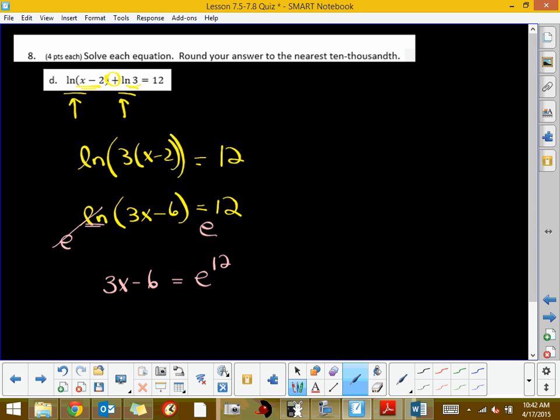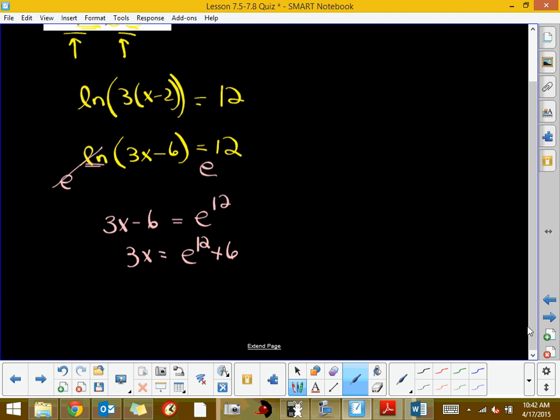We'll simply get rid of subtracting 6 and multiplying by 3. So that means 3x equals e to the 12th plus 6. We'll get rid of multiplying by 3 by dividing by 3. So x equals e to the 12th plus 6. I don't want to make that look like it's in the exponent. So it's e to the 12th, then add your 6, then divide by 3.